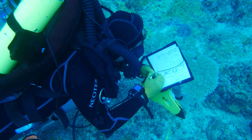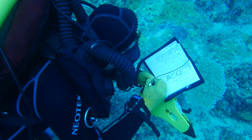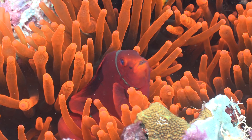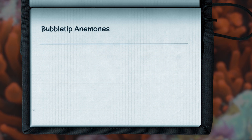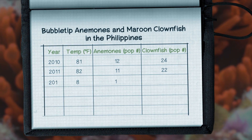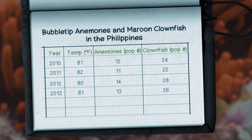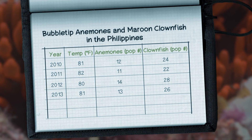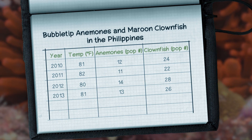Imagine you're a biologist exploring the relationship between bubble tip anemones and maroon clownfish in the Philippines. You visit the same coral reef every year and sample only bubble tips that host maroon clownfish. Look over your field notes — what trends do you see? How are the populations of these two coral reef residents connected?